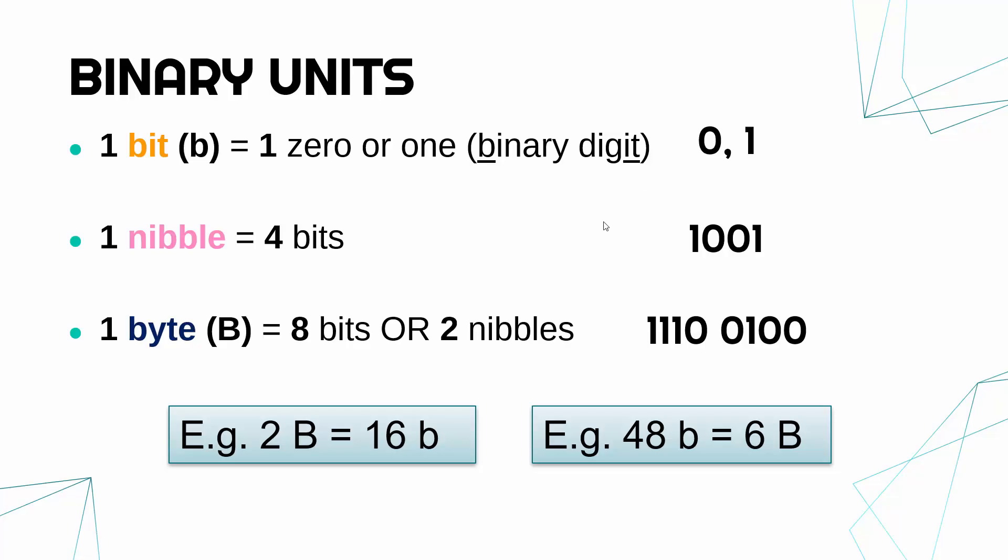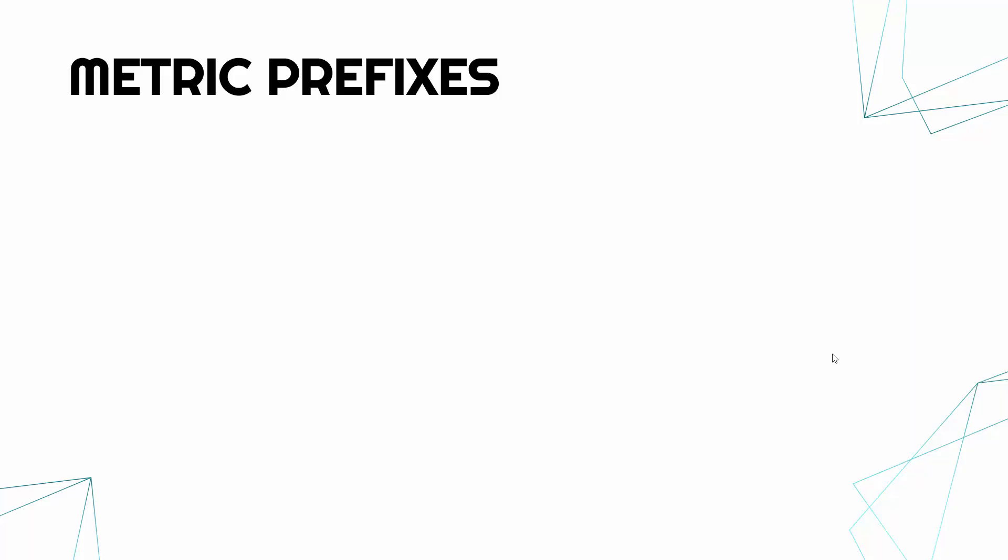Now clearly these are not really enough numbers for us to do much. We can have fairly small numbers with a byte, up to 255. Anything bigger, we need to have more binary data, and so bigger units are needed.